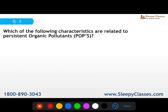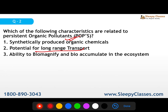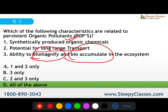The next question is related to persistent organic pollutants (POPs). Which of the following are characteristics? First: synthetically produced organic chemicals. Second: they have potential for long-range transport. Third: they have the ability to biomagnify and bioaccumulate in the ecosystem. The correct answer is all of the above.